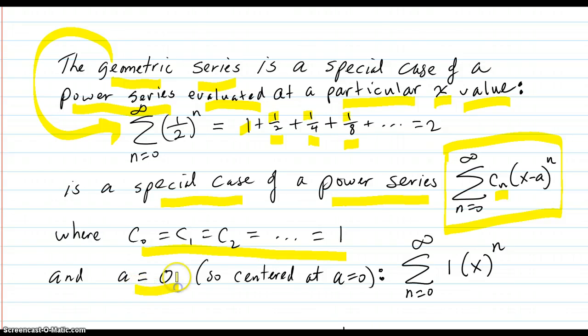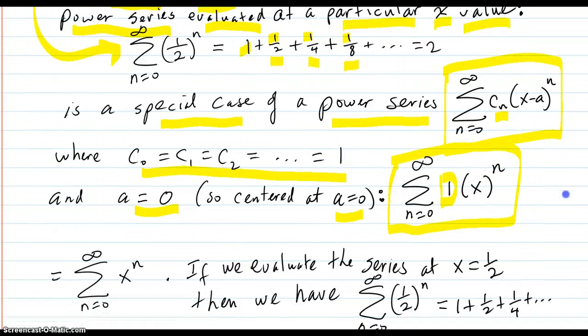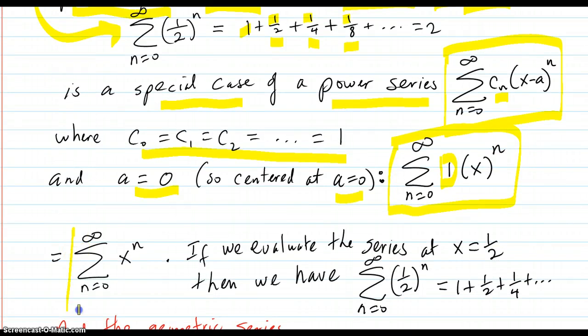A equals zero is where the series is centered. Because the (x minus a), there isn't going to be an a, it's zero. So this is the form of the series that we have: all ones here, and zero in there, x to the n, which is this series here.